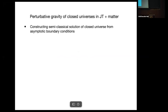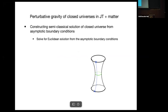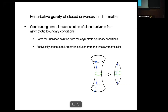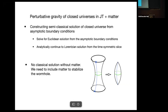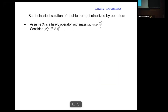Now let's look at perturbative gravity in closed universes in JT plus matter. We want to construct trustworthy semi-classical solutions of a closed universe from asymptotic boundary conditions. Our approach: first solve for Euclidean solutions from some asymptotic boundary conditions, setting boundary conditions and constructing a Euclidean solution. Then cut it in half — look at the time-reflection-symmetric slice and analytically continue to a Lorentzian solution to get a closed universe. One issue is that in JT plus matter there is no classical solution without matter, so we need to include matter to stabilize the wormhole. We consider a particular example with a heavy operator with large mass, so we get a large closed universe where semi-classical physics is more trustworthy.